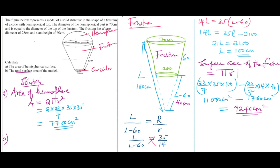What remains is the area of the circular base. The base is in the shape of a circle, so area = πr² = (22/7) × 14 × 14 = 616 cm².